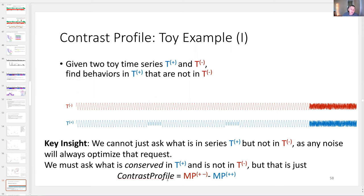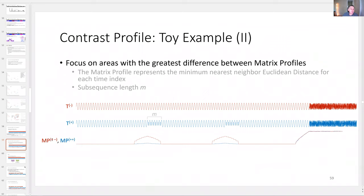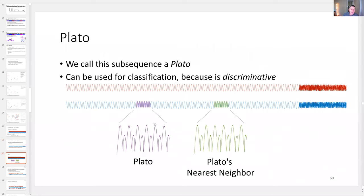Let me show that with a simple toy example. We have two datasets, T-negative and T-positive — negative is simply the comparison dataset. I want to know what happens sometimes in T-plus that is never seen in T-minus. The key insight is we cannot simply ask what is in T-plus but not in T-minus, because the answer is always just some noisy subsequence — noise is always unique in some sense. So we have to ask: what is conserved in T-plus yet not in T-minus? It's a slightly different question, but it makes a huge difference. And the good news is this takes one line of code to compute, because all this is the difference of two matrix profiles: the matrix profile join of plus and minus, and the self-join of plus-plus.